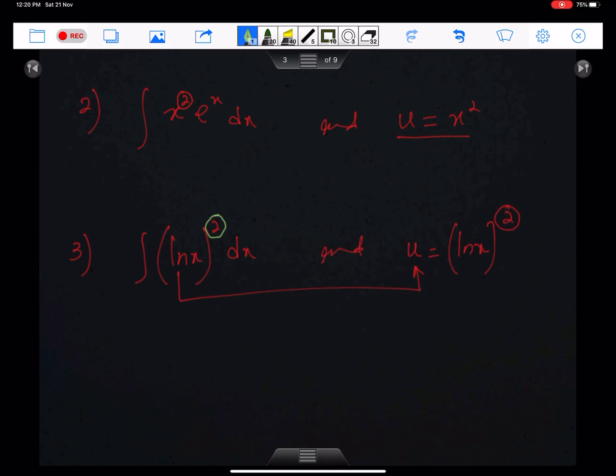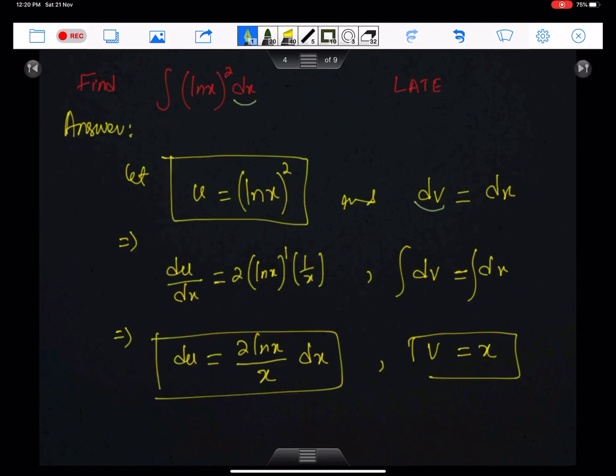Example number 2: Since this x has power 2 and this is the function of u, so use the by-parts twice here as well. In example number 3, since this ln x has whole power 2, therefore use the by-parts twice. Now, let's discuss the way how to use the by-parts twice.